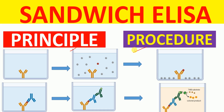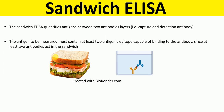So first, what is Sandwich ELISA? Sandwich ELISA is a type of ELISA that quantifies antigens between two antibody layers. The two antibodies used in Sandwich ELISA are called the capture antibody and the detection antibody. The antigen to be measured must contain at least two antigenic epitopes capable of binding to the antibody, since at least two antibodies act in Sandwich ELISA.